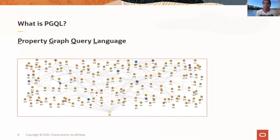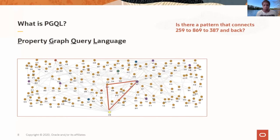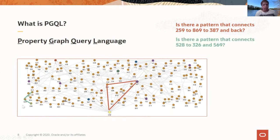When you query a graph, the key advantage is identifying patterns in your data — specific interesting patterns with respect to connections between data items. For example, you can find whether there's an edge from node 259 to vertex 869 to 387 and back — that's a specific pattern. Graph querying is typically about finding whether a particular pattern exists in the graph. Another example: is there a pattern connecting vertex 528 to 326 to 569?